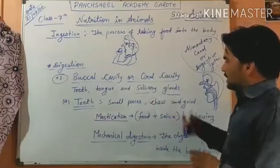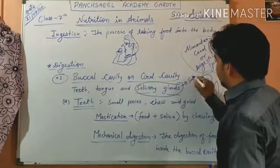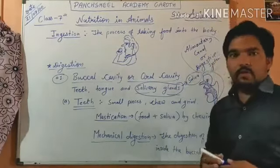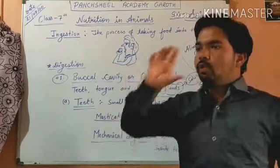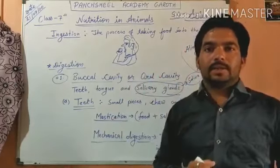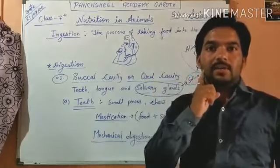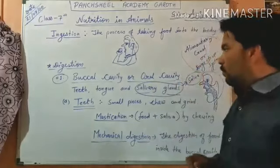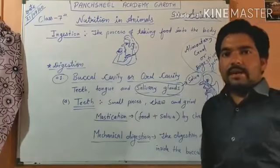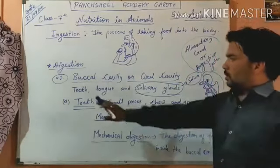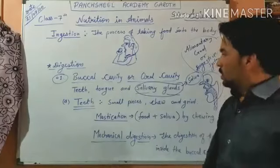Salivary glands are in the buccal cavity and they secrete saliva. We don't need to drink water with every piece of food because whenever we take food inside our mouth, the salivary glands mix our food with digestive juices present in the saliva. So the three main parts are teeth, tongue, and salivary glands.